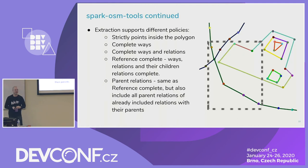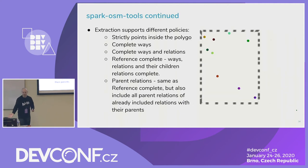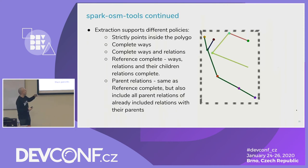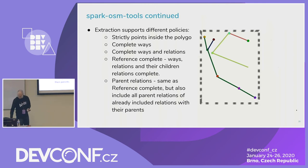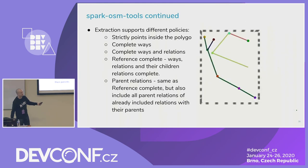One more thing Spark allows is extraction. The extraction of OSM data is a typical problem — you have the whole planet but you want to work on, say, Brno. You have to extract just that area by polygon. Typically tools offer just a few options. The problem is nodes: geometry is only in the nodes, so first you limit to nodes inside the boundary. But then you have to find the corresponding ways and relations. The simplest way is to filter on nodes, find which nodes are included, then include the ways that reference those nodes.